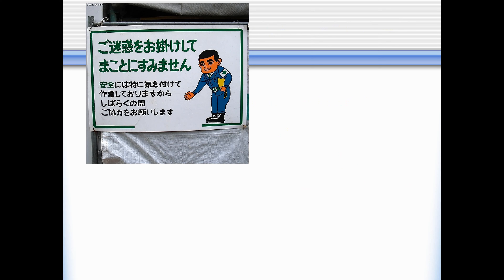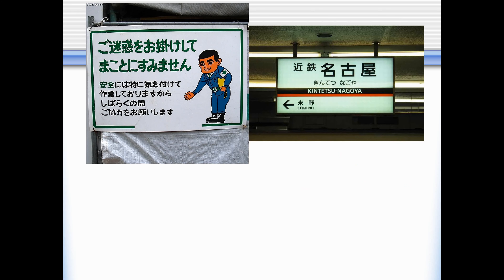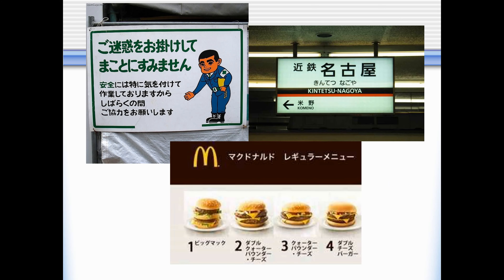Here we can see some more examples of how Japanese is a mix of kana and kanji. The second picture, which is a train station sign, even has some rōmaji, so foreigners who can't read Japanese can read it.